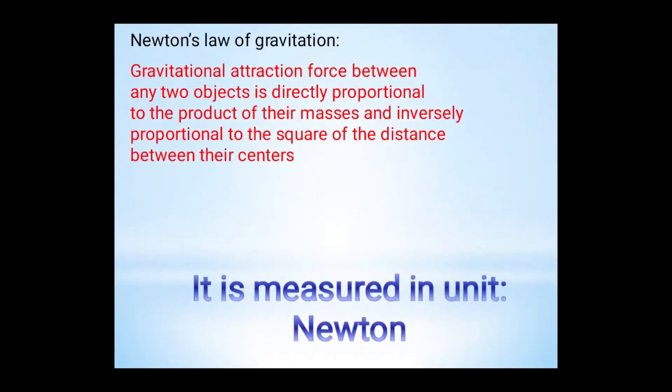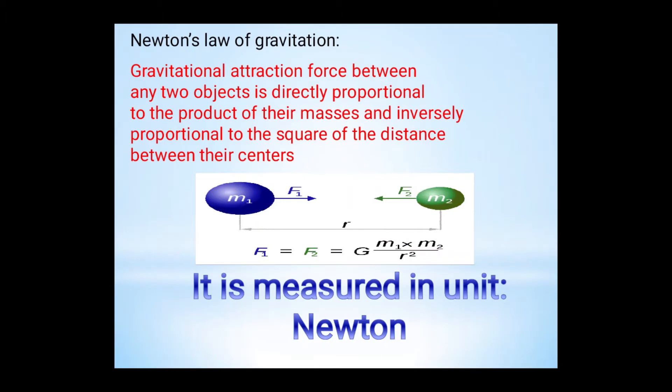Newton's Law of Gravitation. Gravitational attraction force between any two objects is directly proportional to the product of their masses and inversely proportional to the square of the distance between their centers. It is measured in unit Newton.